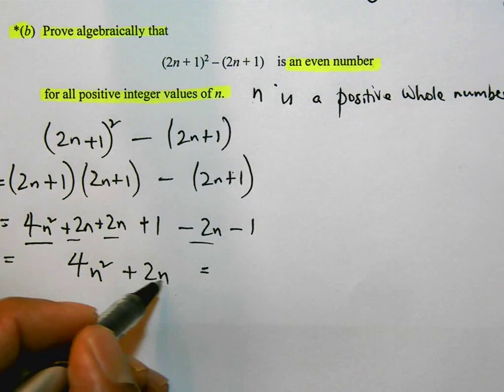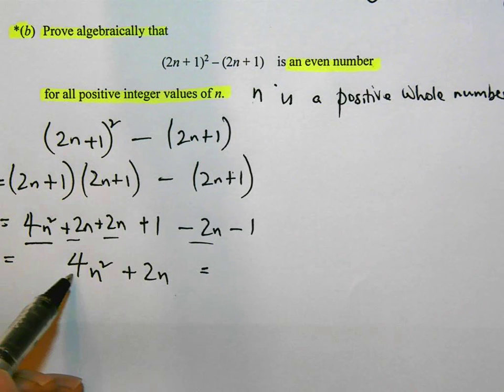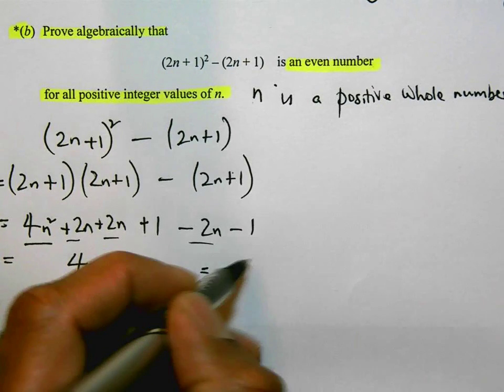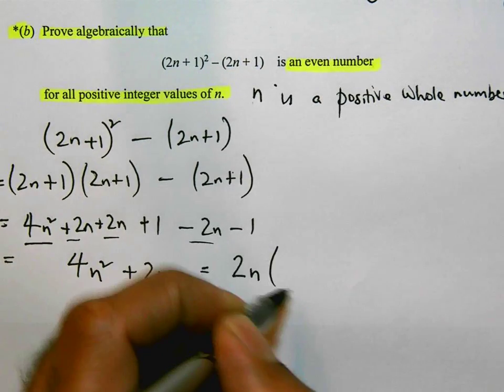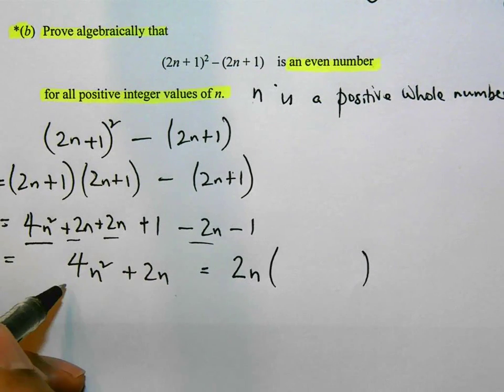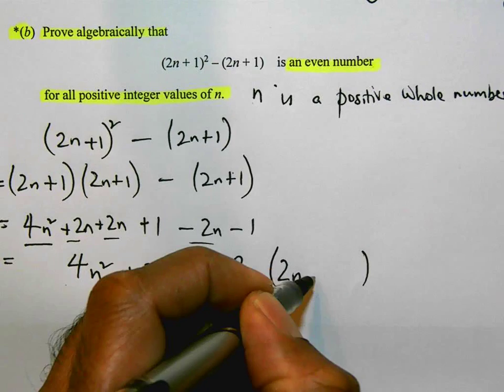And they both have an n. This has n² and this has n. So I can take a factor of 2n outside the brackets. 2n times 2n is going to give me 4n². And 2n times 1 is going to give me 2n. So that's pretty straightforward.